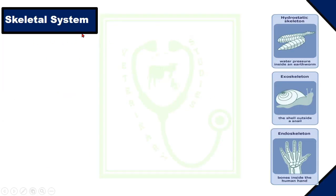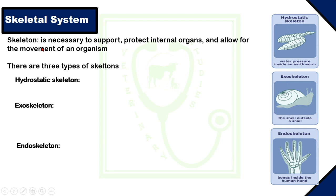The skeletal system consists of the skeleton. The skeleton is a framework that is necessary to support and protect the internal organs and allow for the movement of an organism. Basically, there are three types of skeleton: hydrostatic skeleton, exoskeleton, and endoskeleton, which are found in different animals of the animal kingdom.